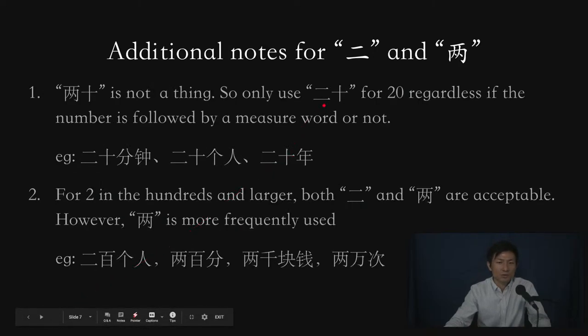Here are some additional notes for 二 and 两. First of all, when we're saying 20, 两十 is not a thing. Regardless if there's any measure words behind it or not, we would always say 二十.